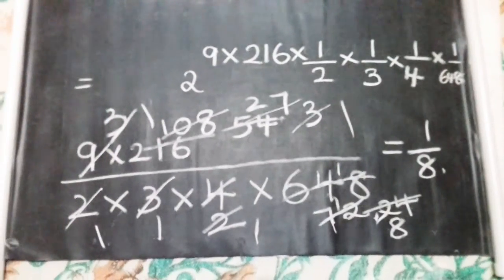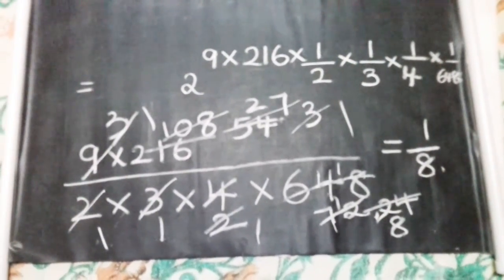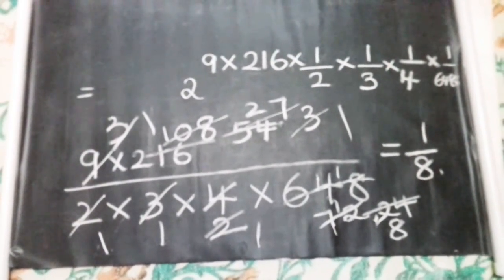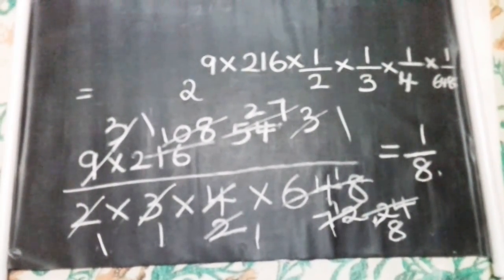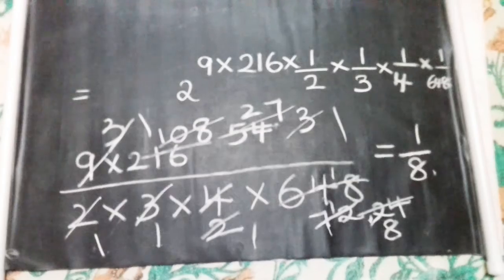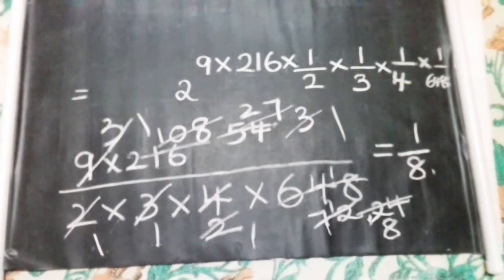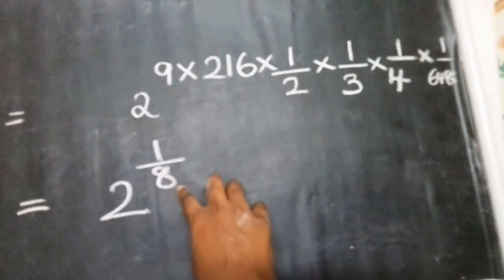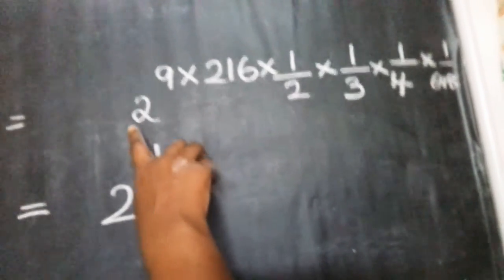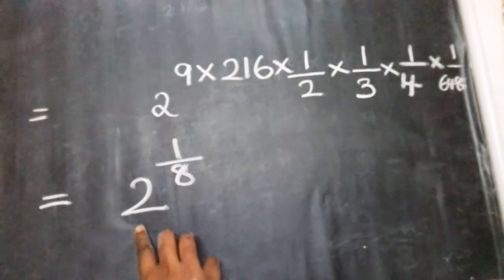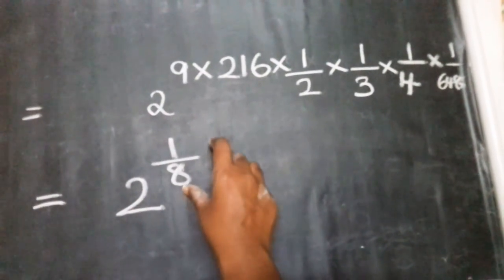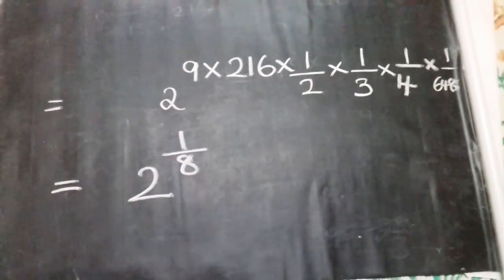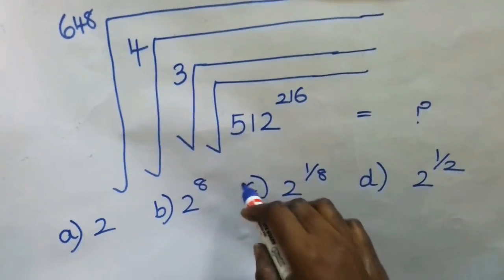So here, simplifying just the power part: 9 into 216 divided by 2 × 3 × 4 × 648 — the answer is 1/8. So the power simplifies to 1/8. The base given is 2, so the final answer is 2 raised to the power 1/8. The answer is option C.